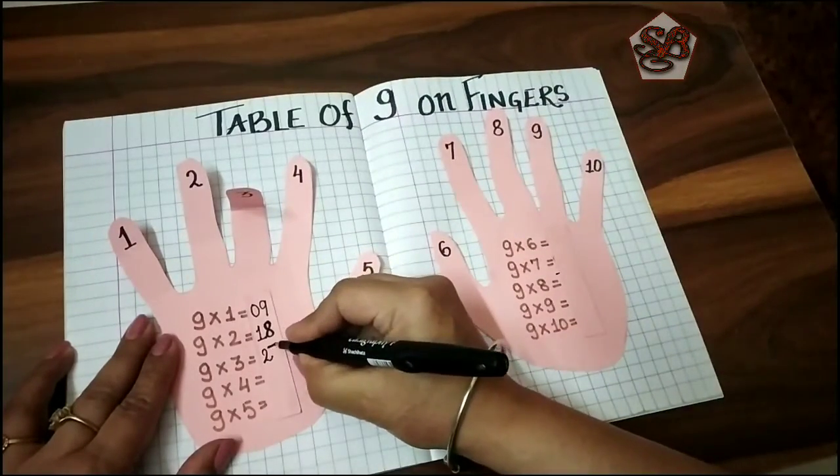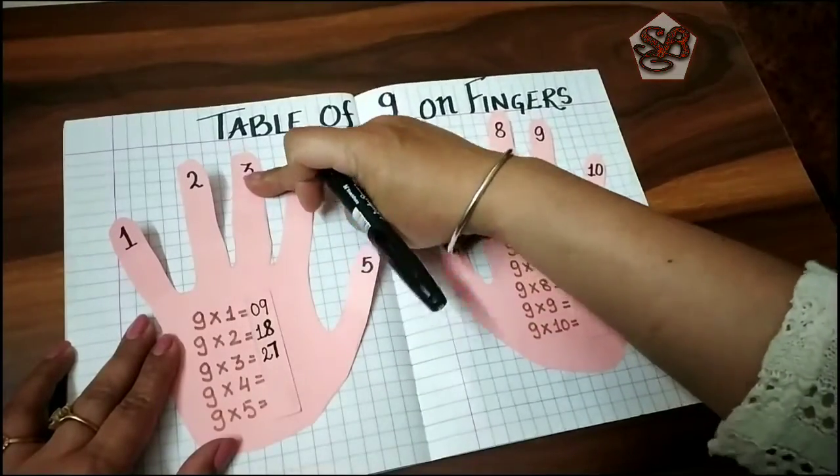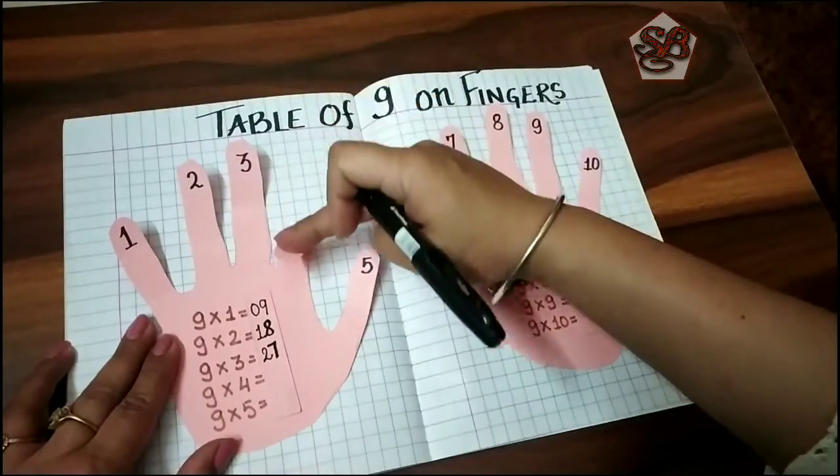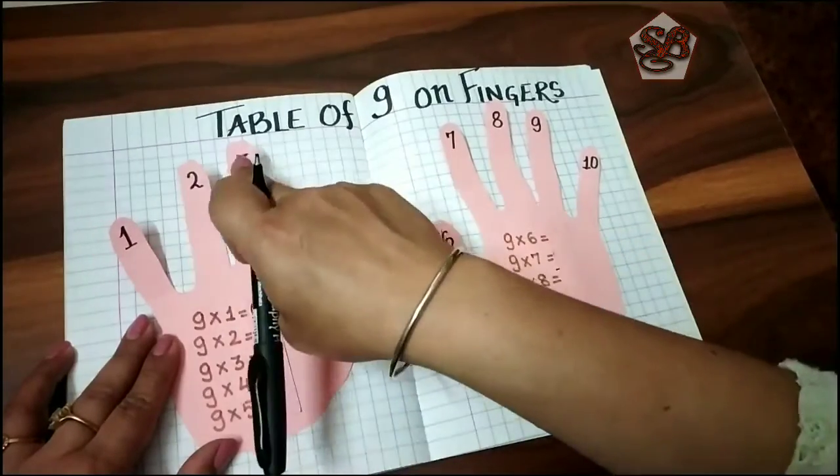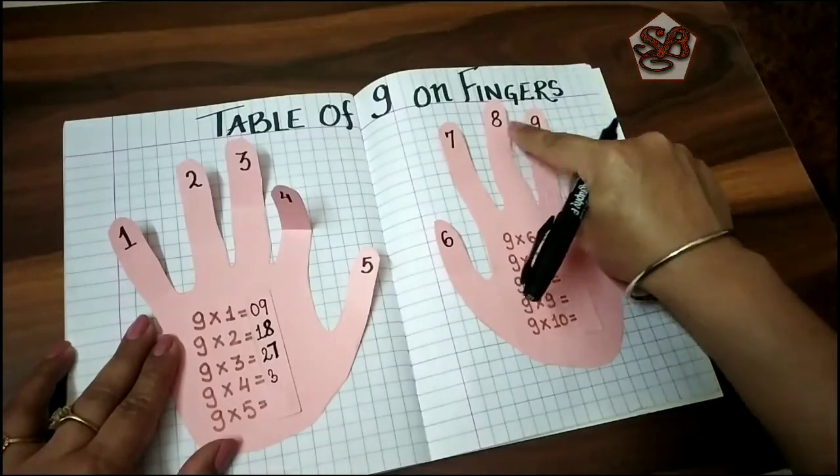Moving on to the next: nine fours are - three and one, two, three, four, five, six. Thirty-six.